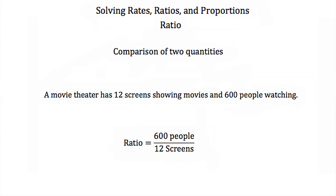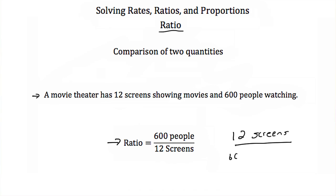The first thing we're going to discuss are ratios. A ratio is just a comparison of two quantities, and it's usually done with division or in fraction form. So if we had a movie theater with 12 screens showing movies and 600 people watching, then our ratio of people to screens would be 600 people over 12 screens. If we wanted the ratio of screens to people, we would have 12 screens over 600 people.